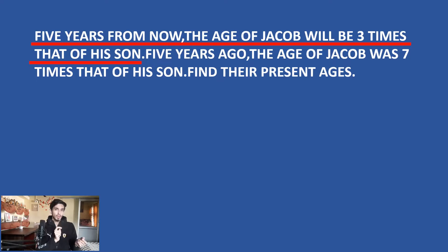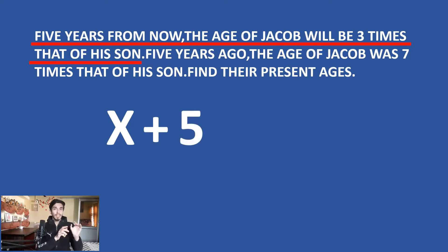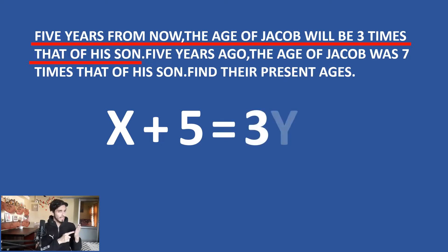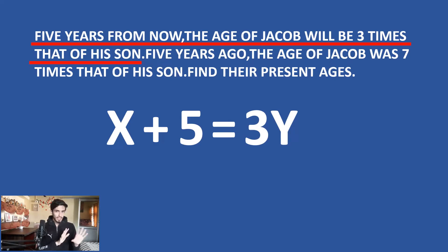Now, what is relating these unknowns? They say five years from now Jacob's age will be x plus five, and that equals three times his son's age, which is 3y. So our equation appears to be x + 5 = 3y. If you are saying yes, that is correct — you have fallen into the trap of this word problem.